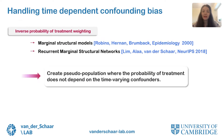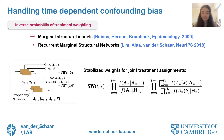Current methods for handling the time-dependent confounding bias are based on marginal structural models and use inverse probability of treatment weighting. Such methods learn the propensity weight of assigning treatments conditioned on the patient history and use these propensity weights to weight the loss function for training the predictive models. Through inverse probability of treatment weighting, these methods create a pseudo-population where the treatment probability no longer depends on the patient covariates, making counterfactual estimates unbiased. A more recent paper proposes recurrent marginal structural networks, which use recurrent neural networks to estimate the propensity scores and the patient outcomes.